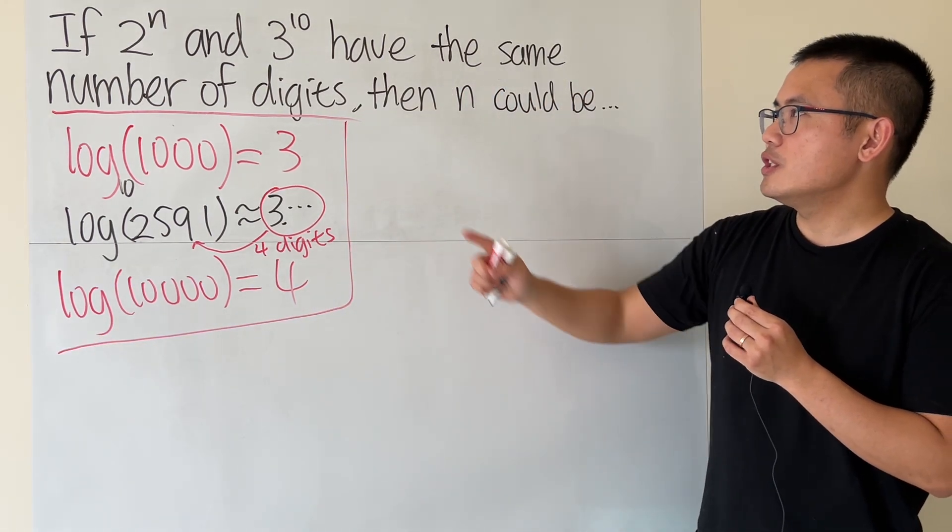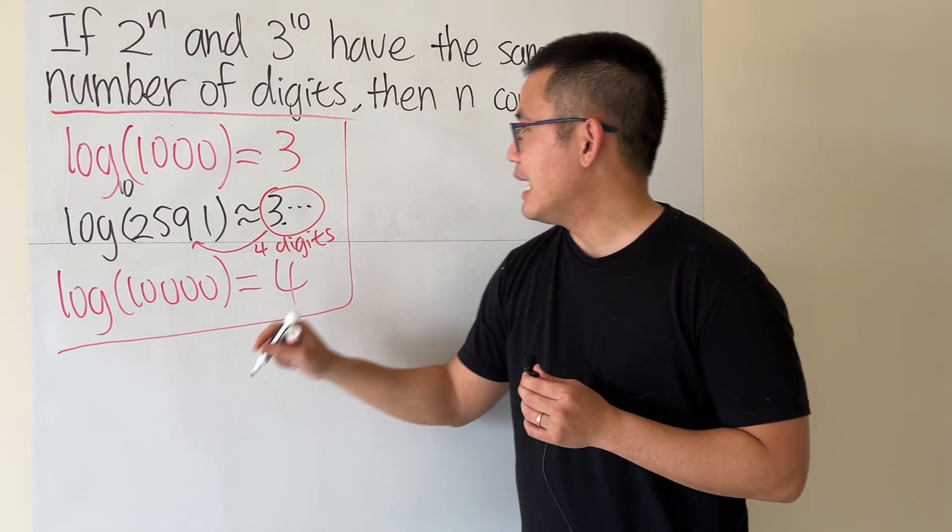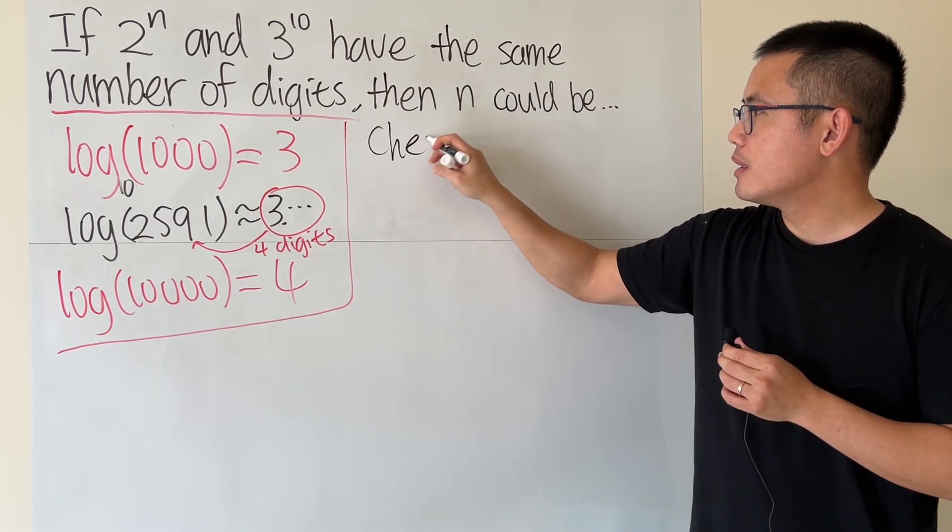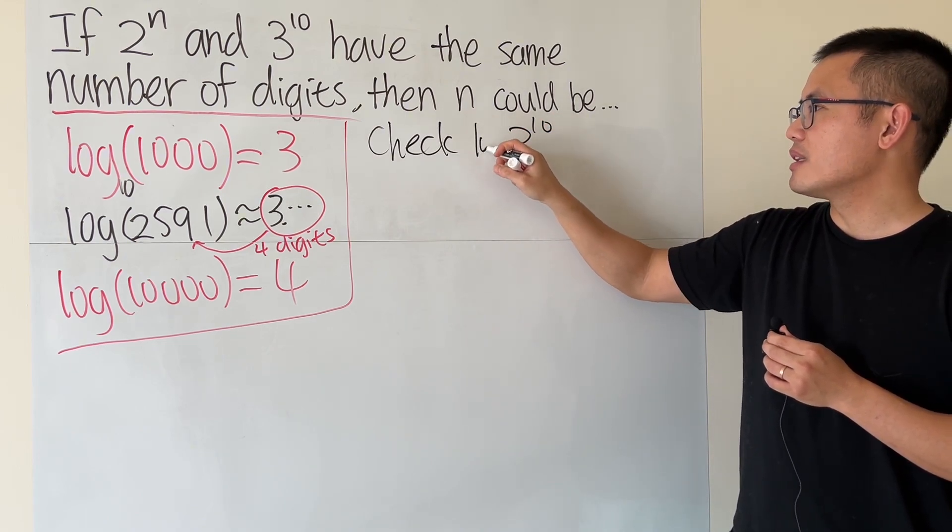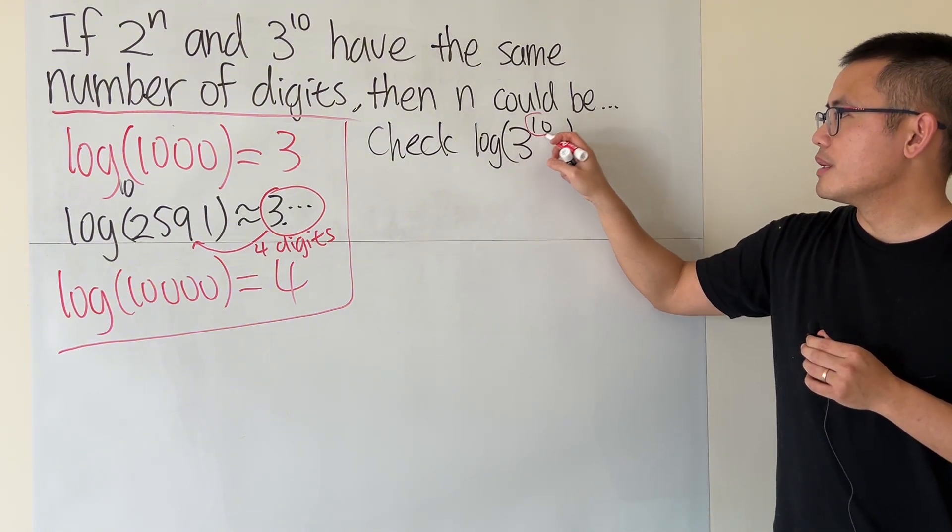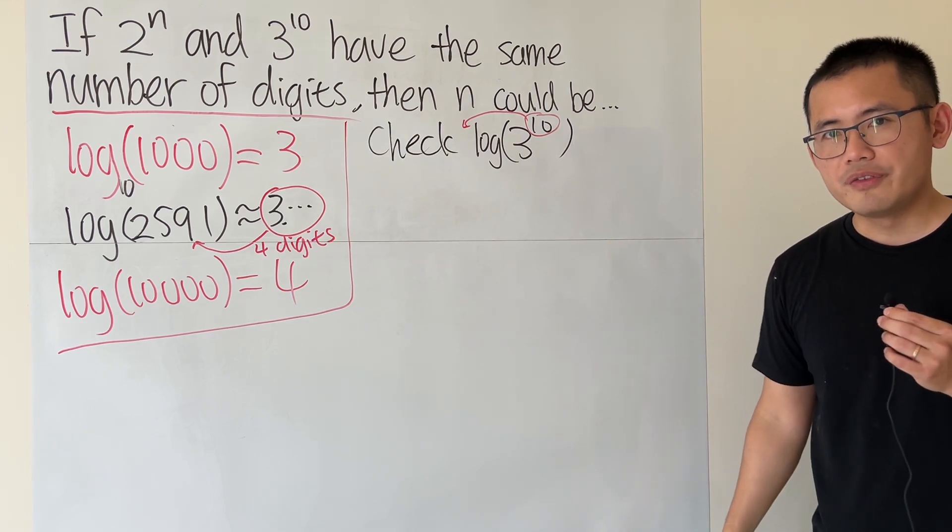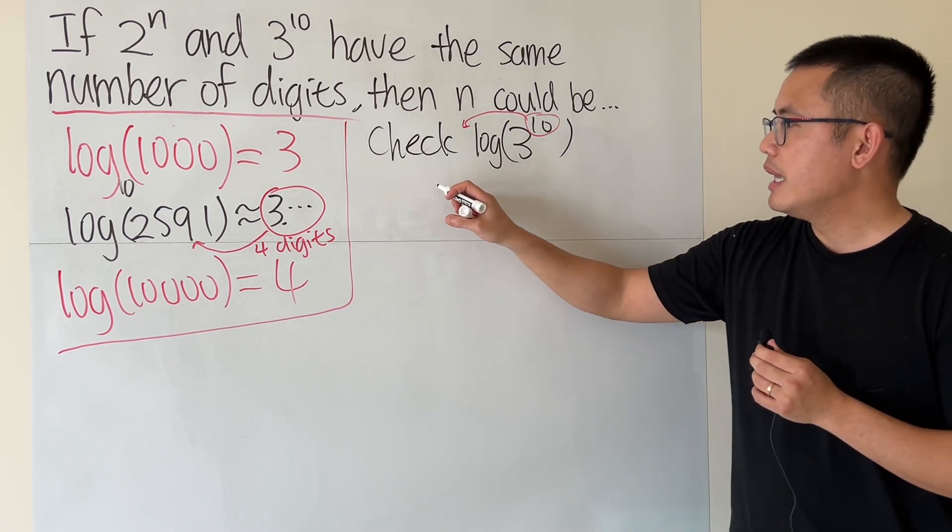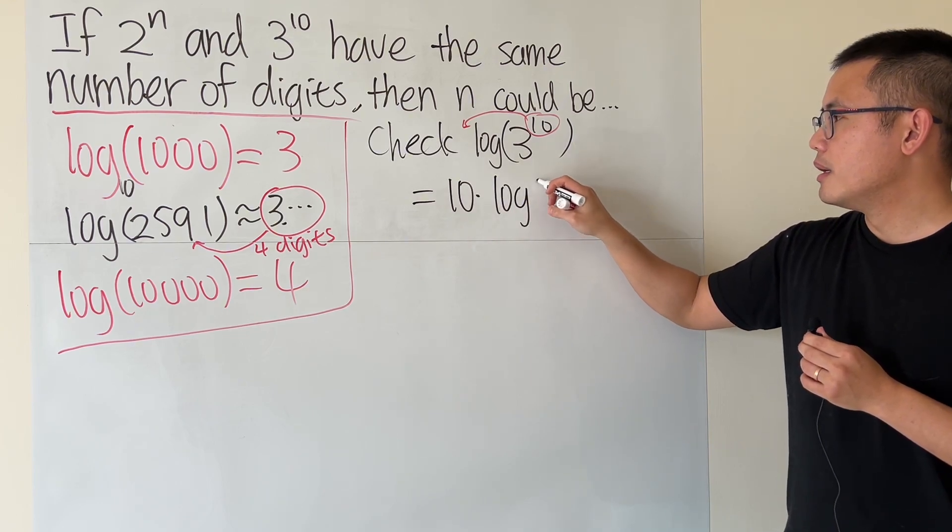So now, how many digits do we have for 3^10? The key to do that is, we will have to check 3^10, but we have to take log base 10. First thing first, we can put the 10 to the front and it becomes a multiplication, because that's one of the properties of logarithm.